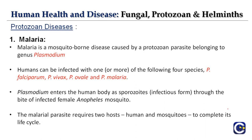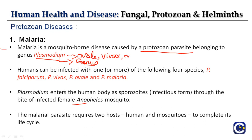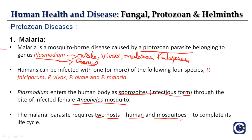Now let's move to protozoan diseases. A very common disease is malaria. Malaria is a mosquito-borne disease caused by the protozoan parasite belonging to the genus Plasmodium. Species include P. ovale, P. vivax, P. malariae, and P. falciparum. The malarial parasite enters the human body as sporozoites — that is the infectious form. The vector is the female Anopheles mosquito. The malarial parasite requires two hosts to complete its life cycle: humans and mosquitoes.